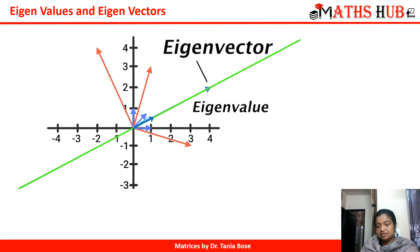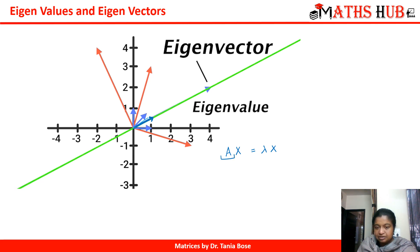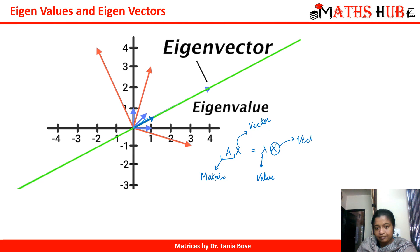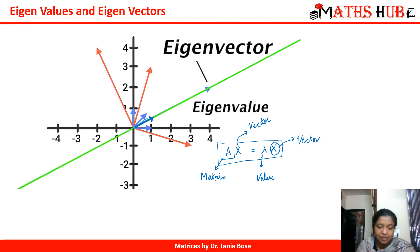In mathematical terms: let A be a matrix and x be a vector. When we multiply them, we get back some scalar multiple of the original vector x. So we write A times x equals lambda times x. Here A is the transformation matrix, x is the vector, and lambda is the scalar value we obtain. Lambda is the eigenvalue and x is the eigenvector, and this equation becomes the mathematical expression for solving eigenvalues and eigenvectors.